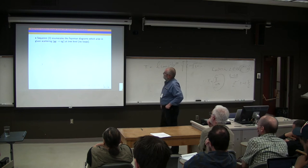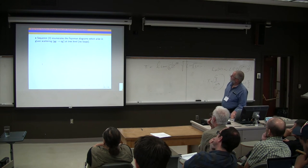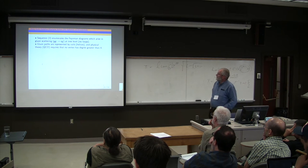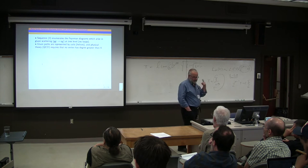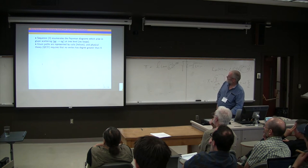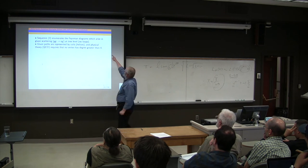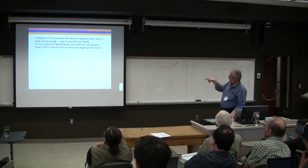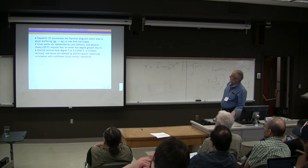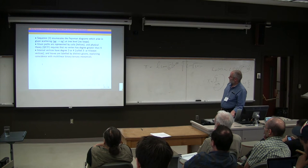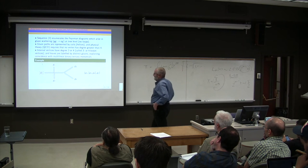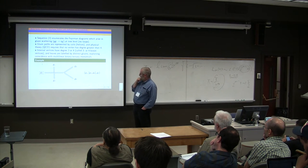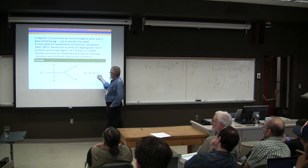So it enumerates the Feynman diagrams which arise in gluon scattering, which is denoted g+g goes to m-g at tree level, and that just means there's no loops allowed in the Feynman diagrams. Gluon paths in the Feynman diagrams are represented by coils, and physical theory, quantum chromodynamics, requires that no vertex has degree greater than four. And so this is what gives us the nice correspondence with trees, binary ternary trees. So the internal vertices in the Feynman diagrams have degree three or four, and the leaves are labeled by distinct gluons. And so here's an example. You have to add an extra node to indicate the root of the tree here.